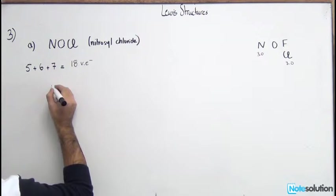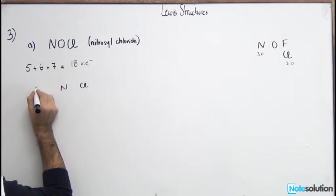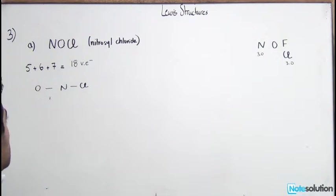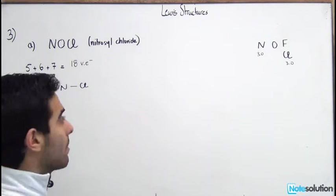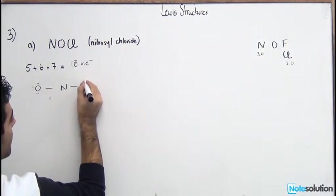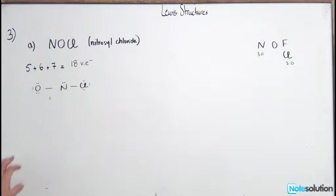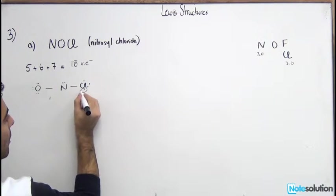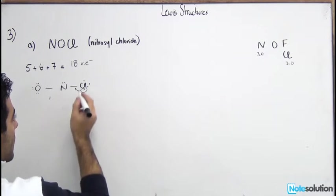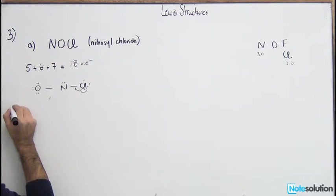Let's explore having N in the middle with Cl and O on the sides. After drawing the bonds, we use four electrons, leaving 14. Filling in lone pairs, we satisfy Cl and O, but N is not satisfied. We have two scenarios: taking a lone pair from Cl to form a double bond, or taking the lone pair from O.